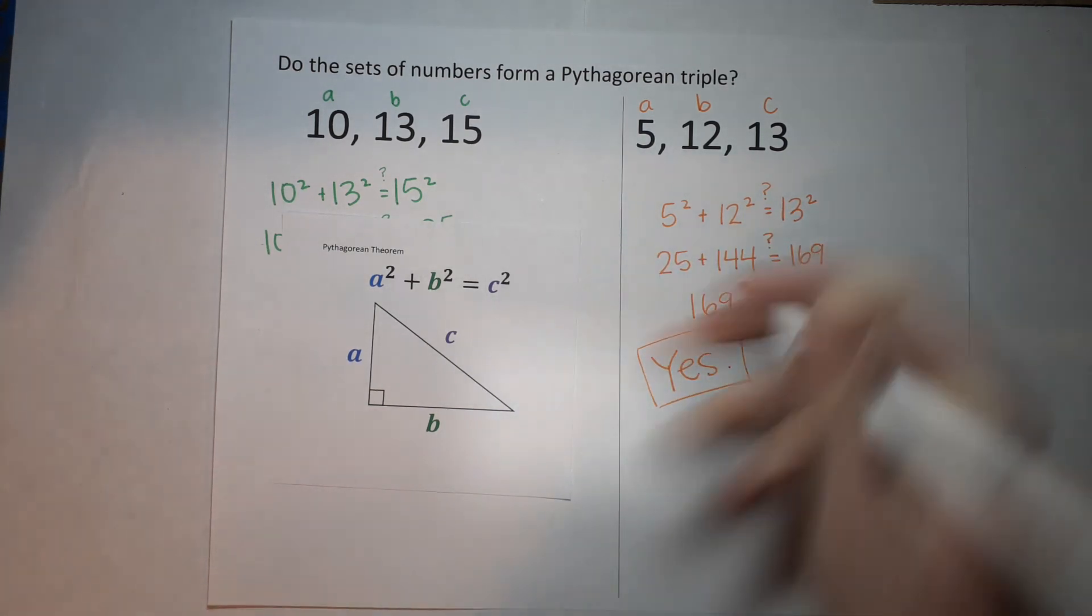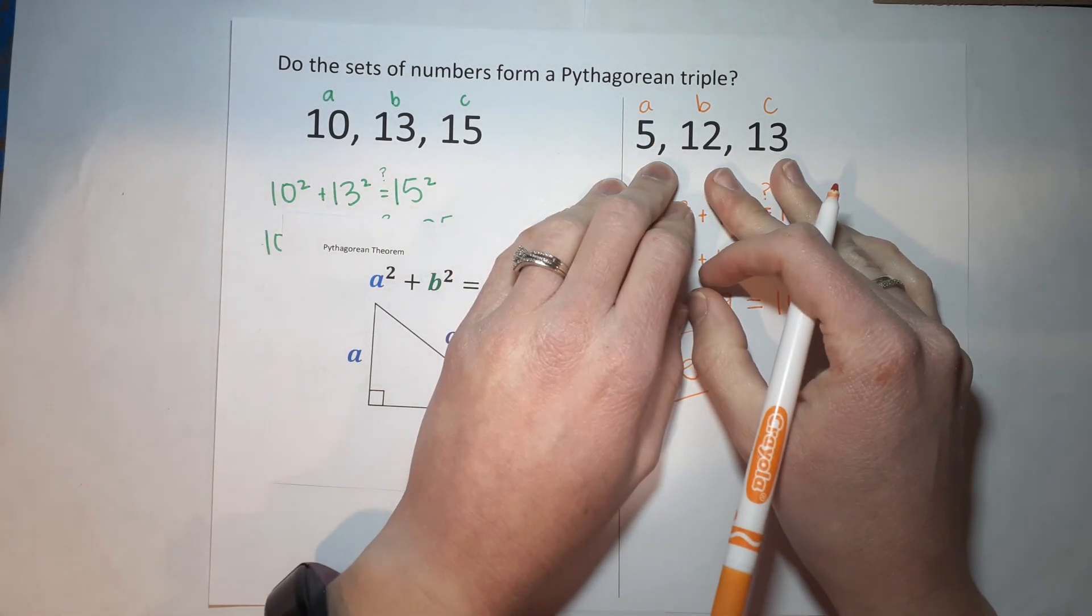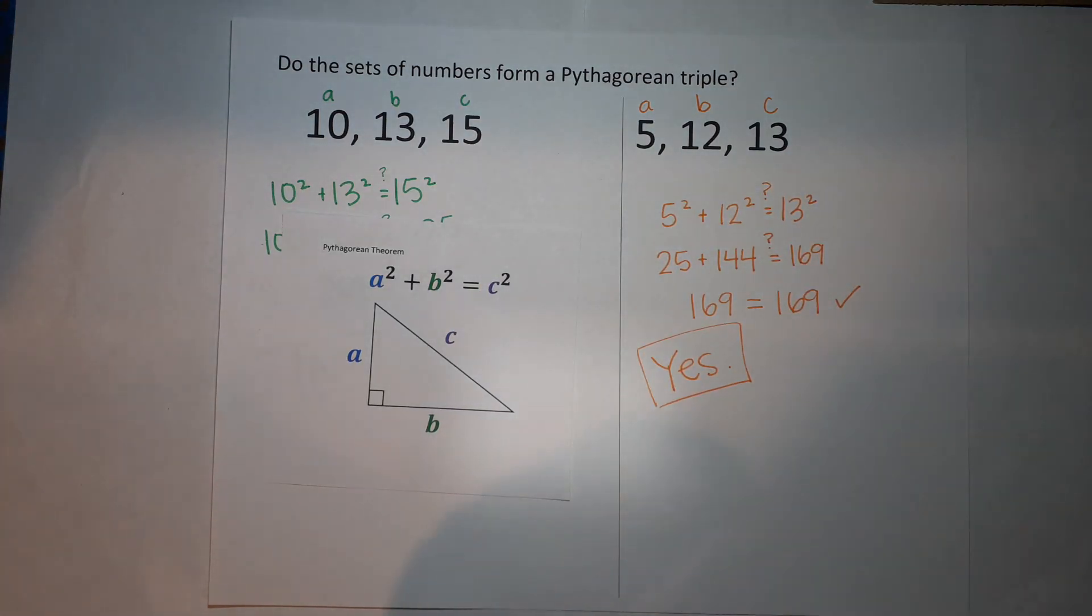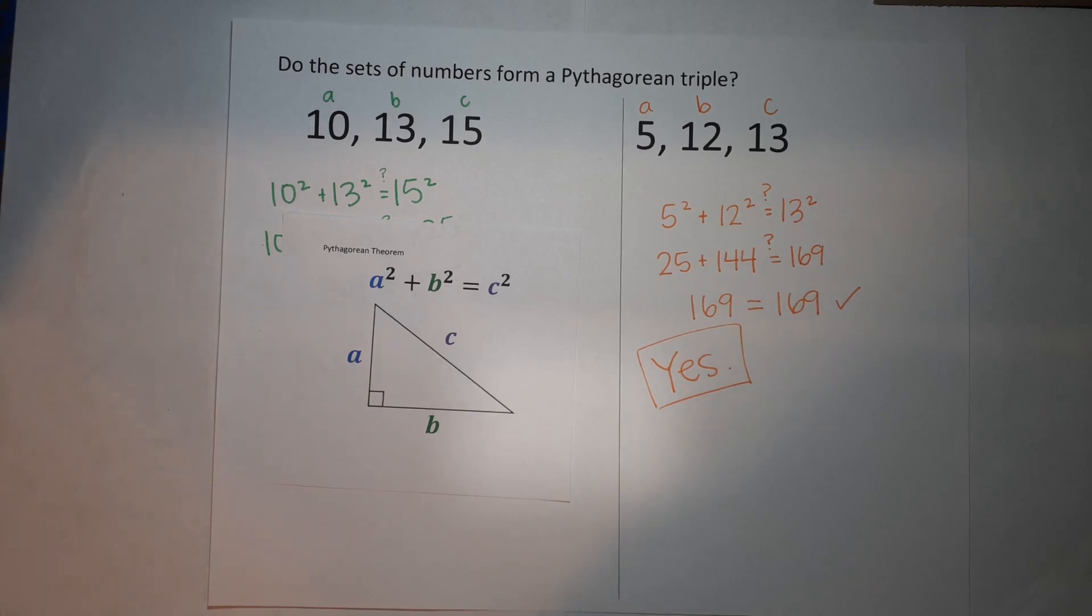So yes, this is a Pythagorean triple. These could be the sides of a right triangle. All right, hopefully that made sense and you can get your homework done and have dreams of math that are nightmares.